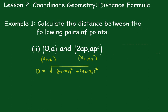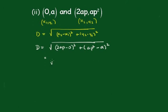Let's pop those in. D is equal to square root of, now this will be 2ap minus 0, all squared, plus ap² minus a, all squared. And that gives me the square root of 4a²p² plus a²p⁴ minus 2a²p² plus a².